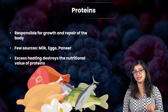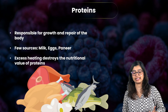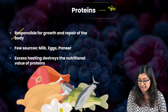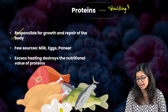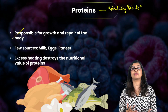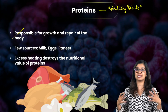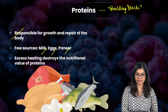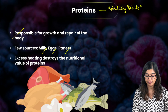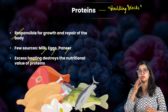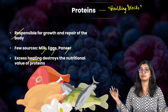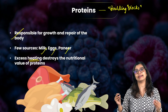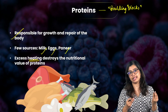The third nutrient is proteins. Proteins are mainly responsible for the growth and repair of the body, and we often call them the building blocks of our body, as most major components of our body are made up of proteins. Milk, eggs, and paneer are some sources of protein. It is important not to overheat proteins while cooking, as excessive heat can damage them — this applies to vitamins and minerals as well, since they can lose their nutritional value.